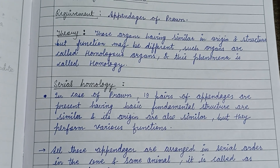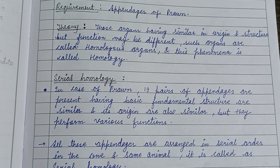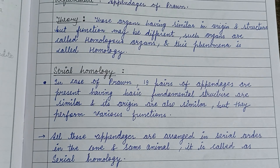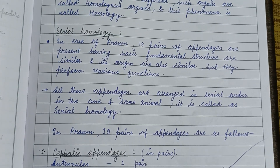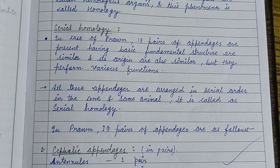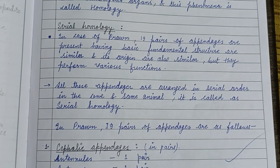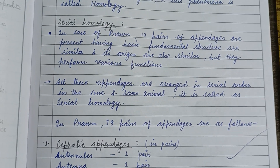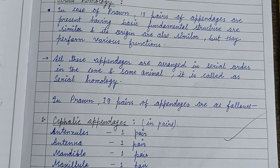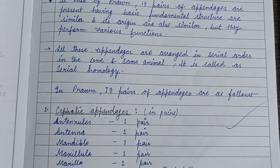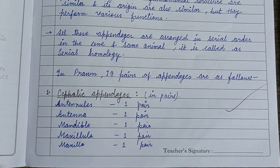Theory: those organs having similar origin and structure, but function may be different, are called homologous organs and this phenomenon is called homology. Serial homology is where the basic fundamental structure is similar and origin is also similar, but they perform various functions, and all these appendages are arranged in serial order in one and the same animal.